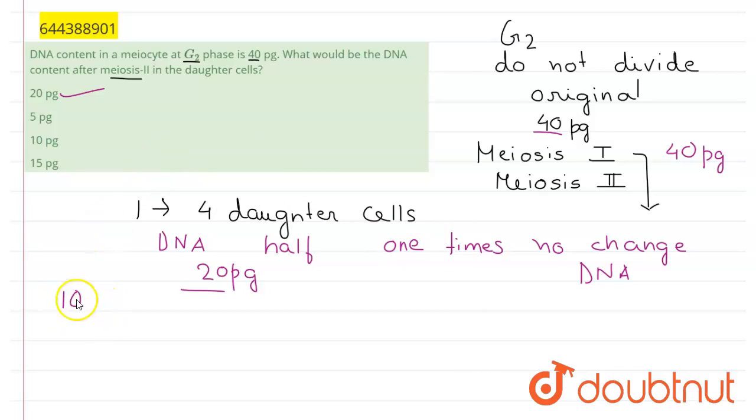So the right option for DNA content is 20 picograms if the DNA was 40 picograms in G2. I hope this solves your doubt.